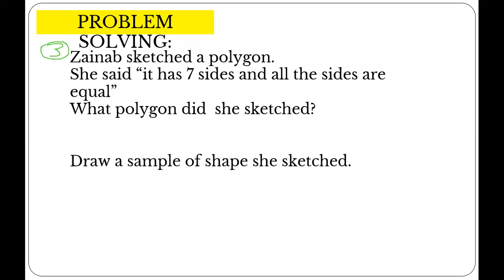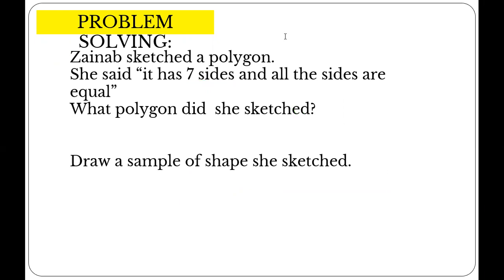I want you to solve this one. It says: Zainab sketched a polygon. She said it has seven sides and all the sides are equal. What polygon did she sketch? Draw a sample of the shape she sketched. Seven sides is called heptagon. So the name is heptagon. You are going to draw a heptagon with seven equal sides. The answer is it is a regular polygon, and it is a regular heptagon.